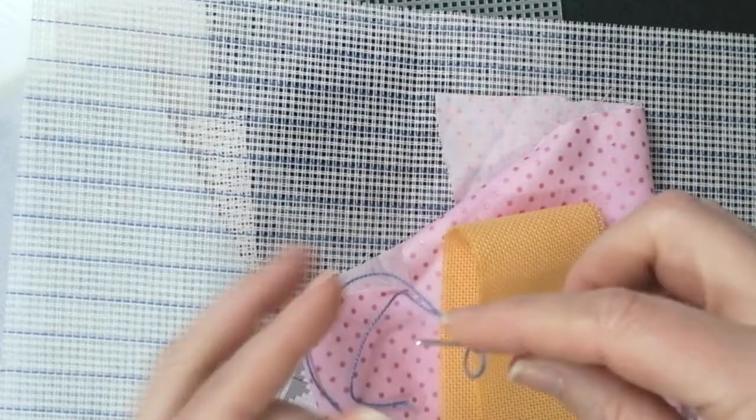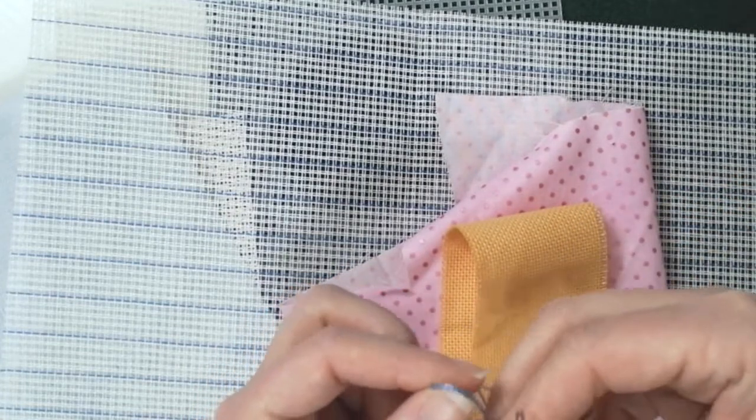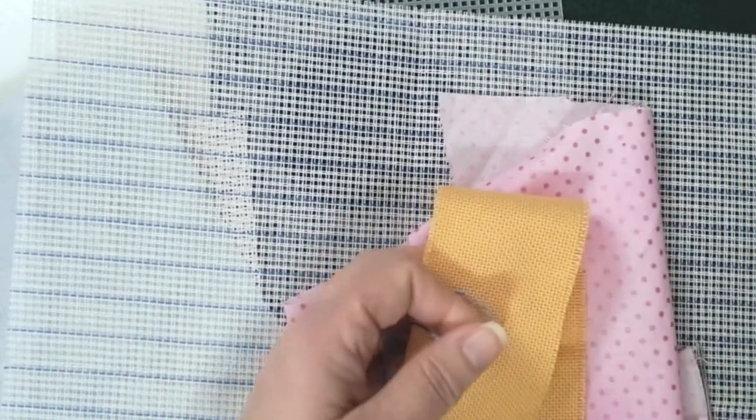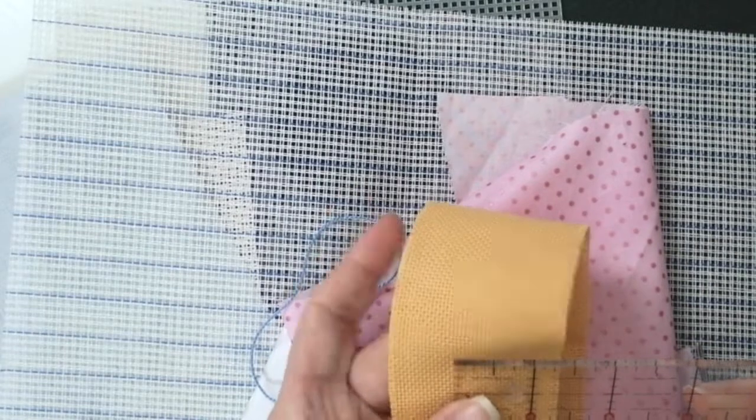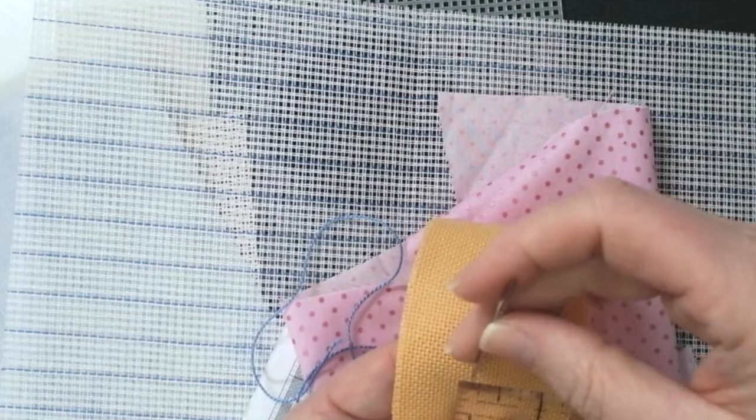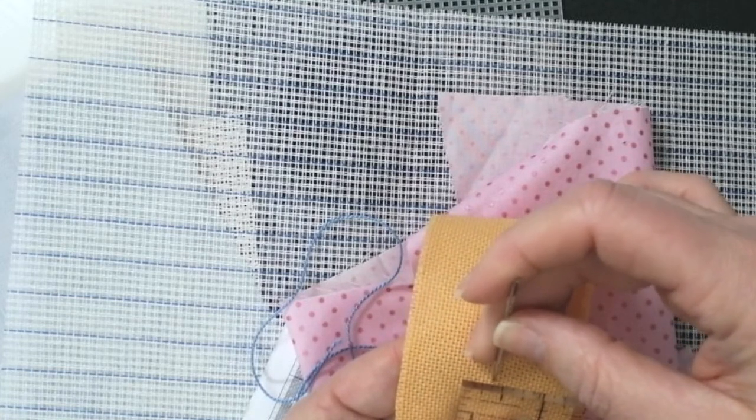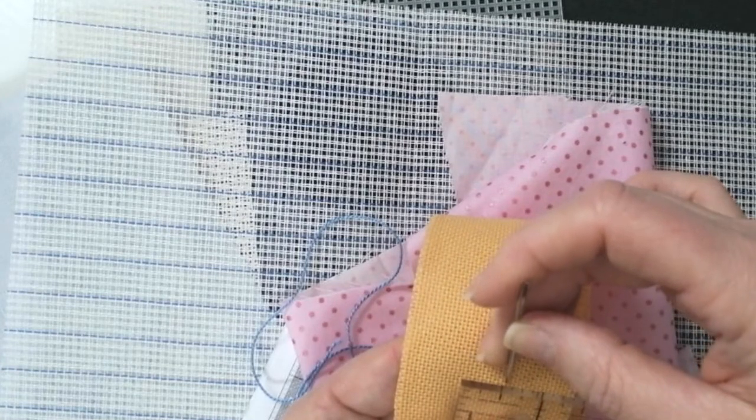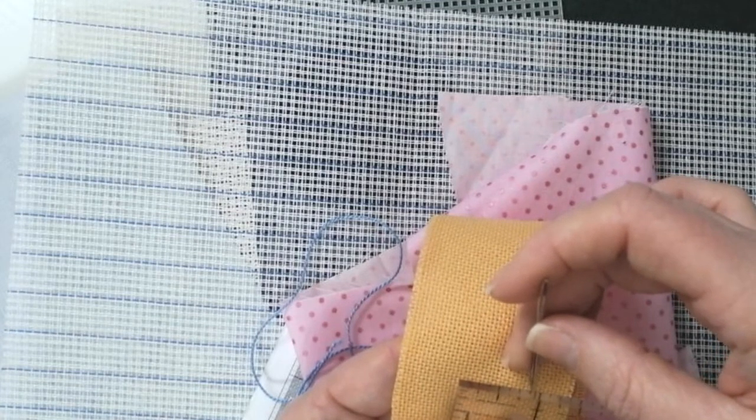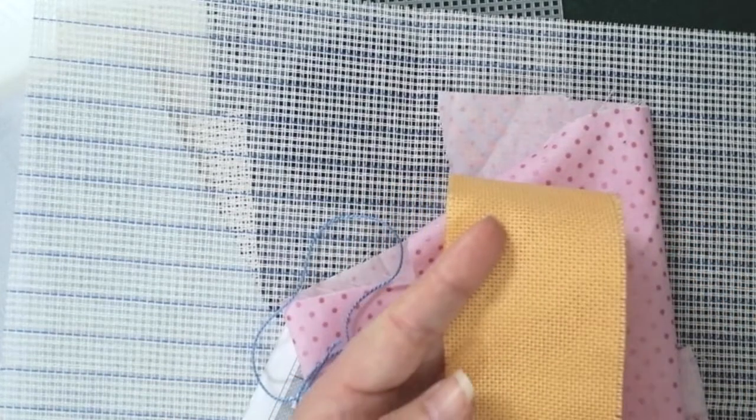We're now going to thread the needle. I'm using a number 17 tapestry needle, I'm using a number 5 pearl cotton, and I'm using, let's count how many threads per inch we have. We have 1, 2, 3, 4, 5, 6, 7, 8, 9, 10, 11, 12, 13, 14, 15, 16, 17, 18, 19, 20 threads per inch. So this is a 20 count even weave.